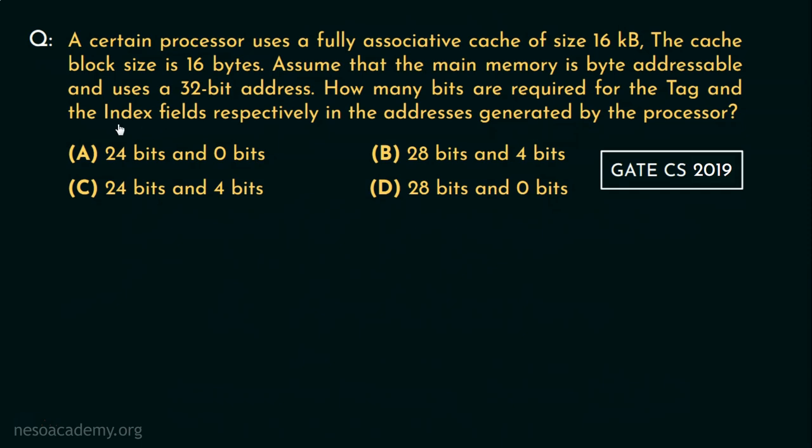Now think about it. The index fields are nothing but the line number bits which are relevant for direct memory mapping but not in terms of fully associative mapping. So the question setter is trying to comprehend our clarity regarding fully associative memory mapping concept. Let's try to solve the question now.